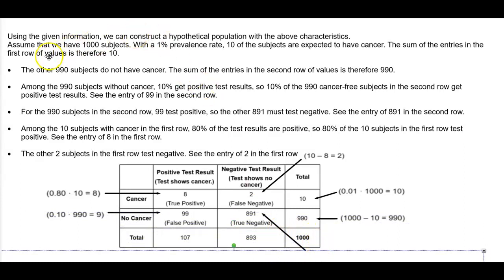Using that information, assume that we have 1,000 subjects with a 1% prevalence rate. If we take 1% of 1,000 — that is, 0.01 multiplied by 1,000 — that gives us 10. So 10 subjects are expected to have cancer, and the row total for cancer subjects is 10. The other 990 subjects do not have cancer, so the sum of entries in the second row is 990, since 1,000 minus 10 equals 990.